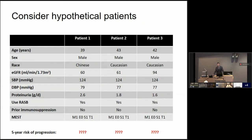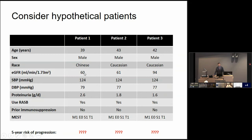Consider three hypothetical patients, all with the same MEST-C score, all treated with RAS blockade prior to biopsy, but with slight differences in age, race, blood pressure, and proteinuria. Patient 1 has the lowest GFR and slightly higher proteinuria. We would intuitively guess patient 1 is at highest risk — certainly higher than patient 3. But how much higher? And what about patient 1 versus patient 2, who have similar GFRs with only very small differences in proteinuria? We'll come back to these three patients later.